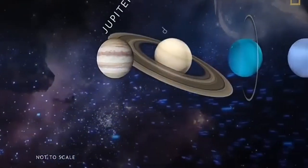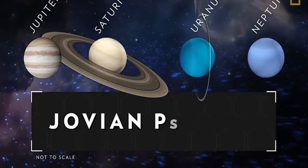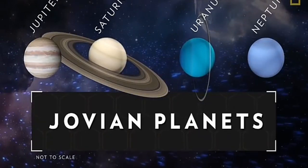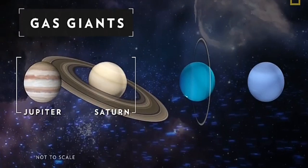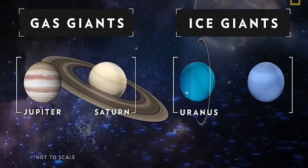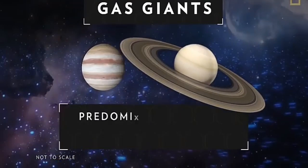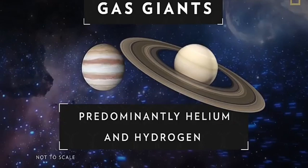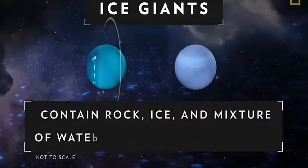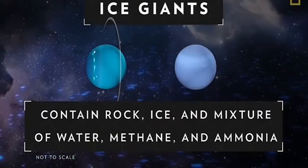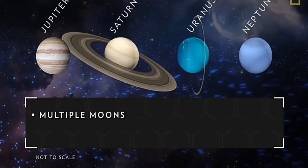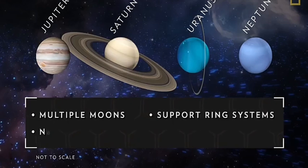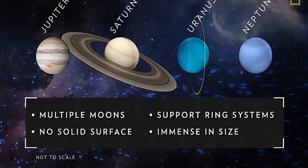Beyond the four terrestrial planets of the inner solar system lie the Jovian planets of the outer solar system. The Jovian planets include gas giants Jupiter and Saturn, and ice giants Uranus and Neptune. The gas giants are predominantly made of helium and hydrogen, while the ice giants also contain rock, ice, and a liquid mixture of water, methane, and ammonia. All four Jovian planets have multiple moons, sport ring systems, have no solid surface, and are immense.